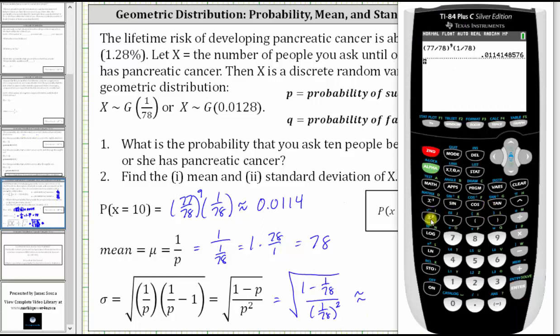Now we'll go back to the calculator and enter this expression carefully. We have the square root. In the numerator, we have one minus one divided by 78. Close parenthesis for the numerator. And then divided by, in the denominator, we have 1/78 squared. Right arrow. Notice how we have the numerator and denominator entered correctly under the square root. We press enter. To four decimal places, the standard deviation is approximately 77.4984.